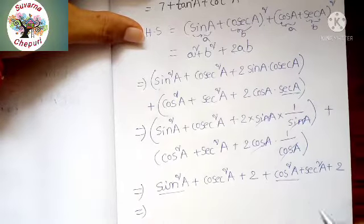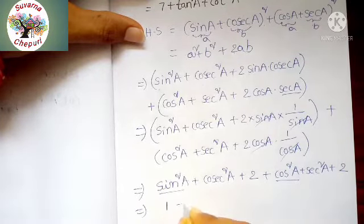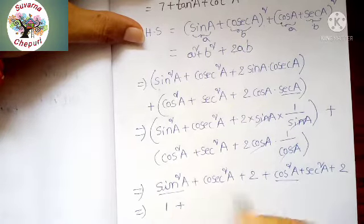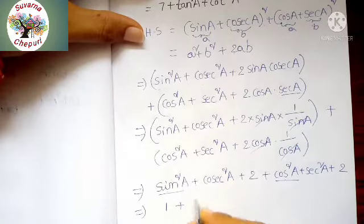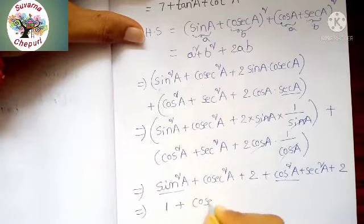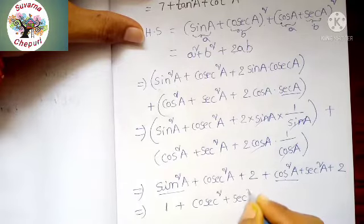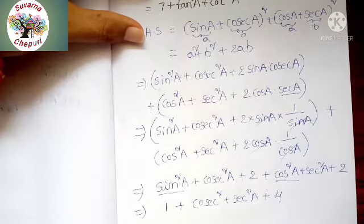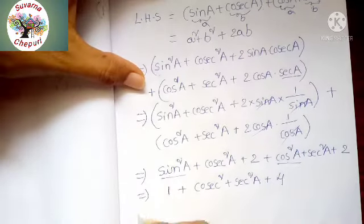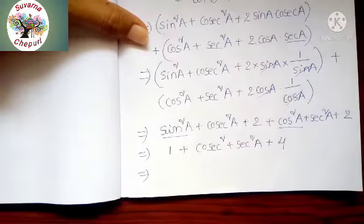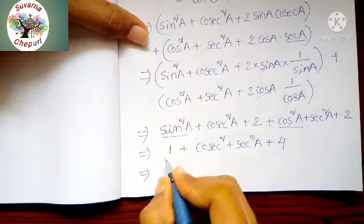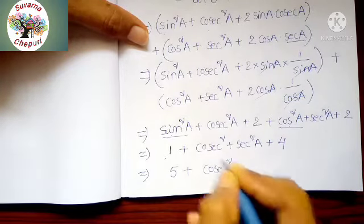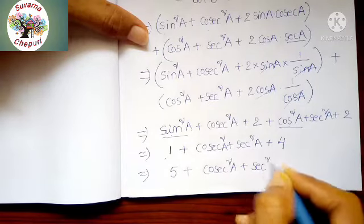Here, sin squared A plus cos squared A equals 1, by using trigonometry identity. The remaining terms are cosecant squared A plus secant squared A plus 2 plus 2, which is 4. So 1 plus 4 gives 5, plus cosecant squared A plus secant squared A.